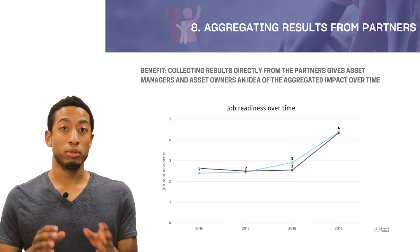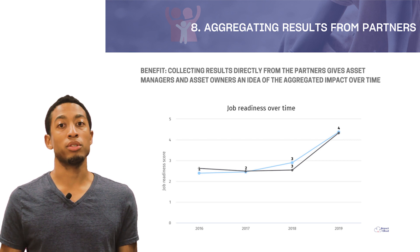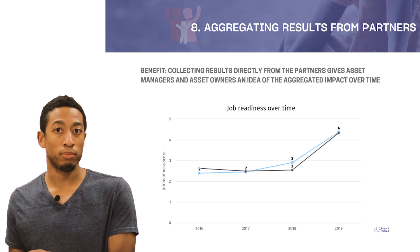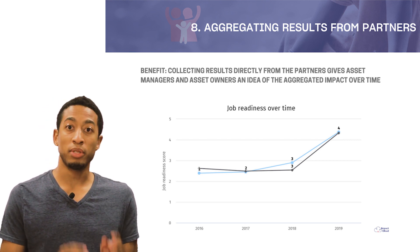The benefit: collecting results directly from your partners ensures that they also have a process in place to obtain data directly from their communities. The challenge: the level of granularity of your metrics will depend on the maturity of the underlying organizations and their relationship with the asset owner or manager.